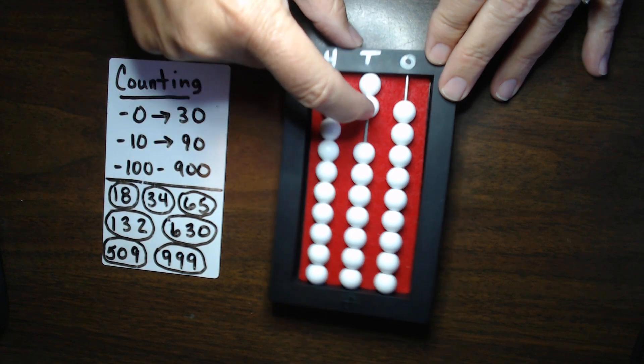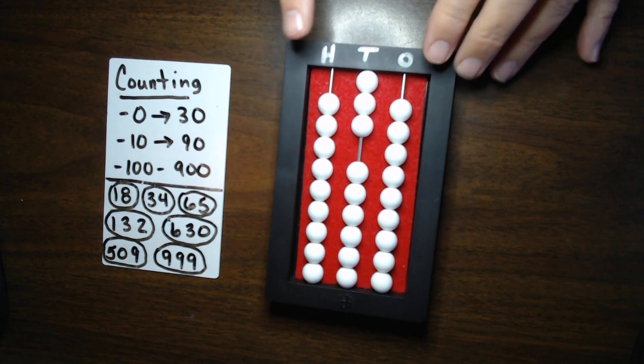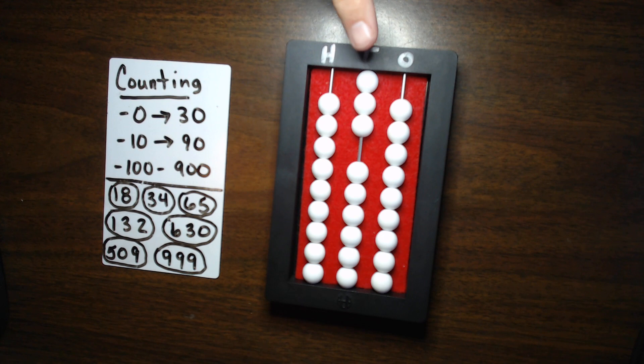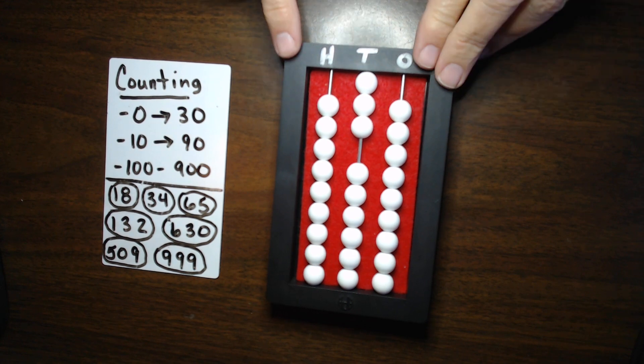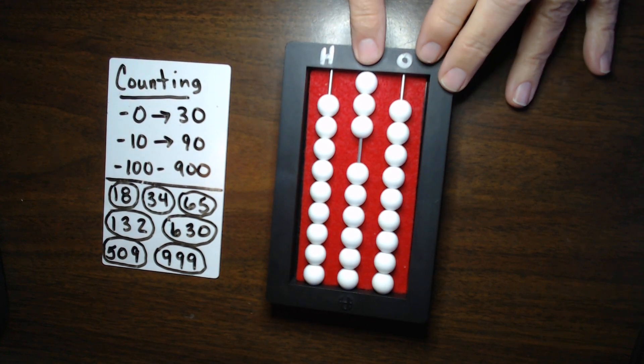I could just start in the 10s column, counting by 10s, right? So, I could just say 10, 20, 30. And I end up exactly where I was when I was counting to get to 30. And you could continue in the 10s column doing that.